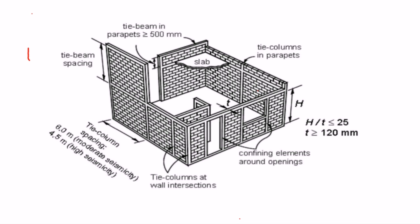For example, spacing of tie columns and the layout of tie columns — these are reinforced concrete confining elements — is very important. Also, spacing of tie beams and the location of tie beams, which are usually at the floor and roof level, is also very important.